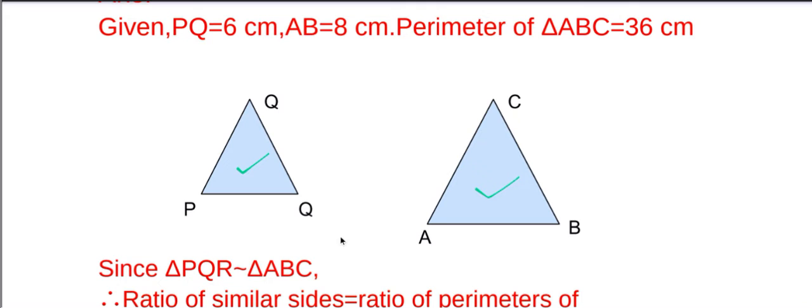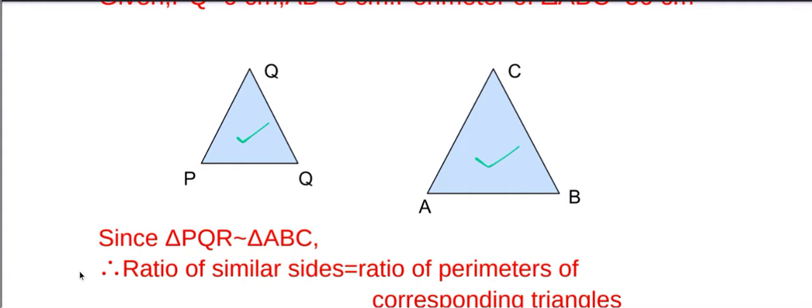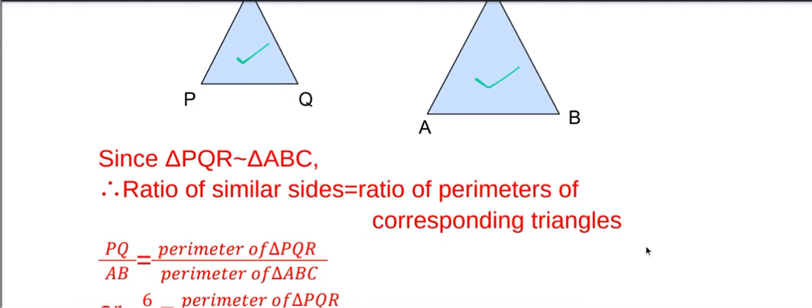Since PQR and ABC are similar triangles, therefore we will apply the formula that the ratio of similar sides is equal to the ratio of perimeters of the corresponding triangles.